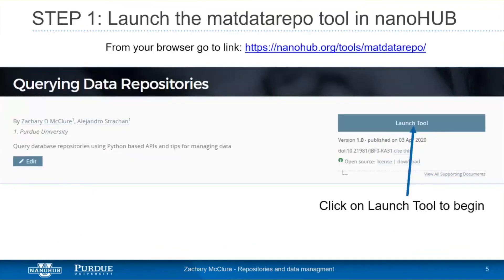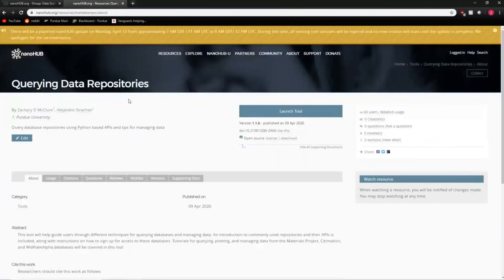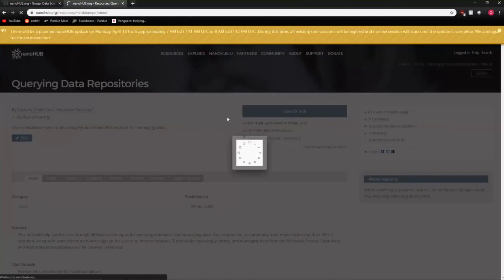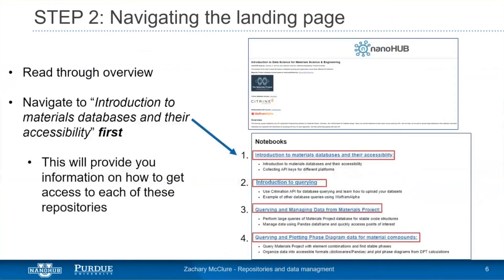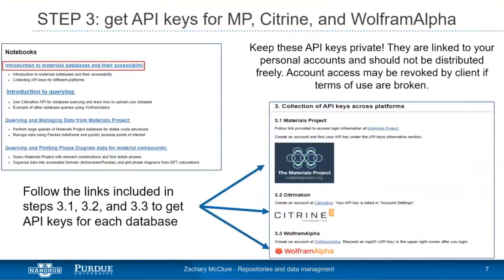We'll be working on NanoHub today at the querying data repositories tool. The first piece after the landing page should already be completed — instructions for how to get your unique API keys. You'll navigate through four different notebooks; your homework was to complete the first one, which summarizes what an API is and how to get API keys for the Materials Project, Citrine, and Wolfram Alpha. These API keys should be kept private — they're linked to your personal accounts, and your access may be revoked if terms of use are violated.